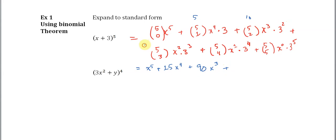5 choose 3 is also the same thing as 5 choose 2, so that's going to be 10 times 3 cubed, which is 27, so we get 270x squared. 5 choose 4 is 5 times 3 to the fourth, which is 81. So 5 times 81 is 405x to the first power. And then finally, 5 choose 5 is 1 times 3 to the fifth, which is 243.